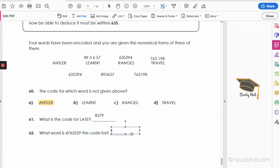Now what word is 4, 7, 6, 3, 5, 2, 9? So 4, we know that 4 is S from RANGES. 7, we know that 7 is T from TRAVEL and LEARNT. 6, we know that 6 is R from LEARNT, RANGES and TRAVEL. 3, we know that 3 is A from LEARNT, RANGES and TRAVEL too. 5,